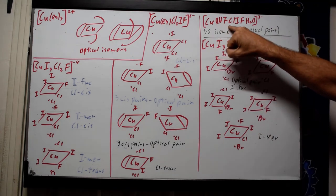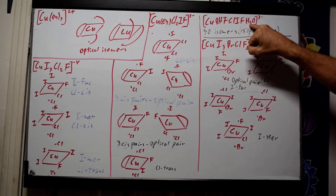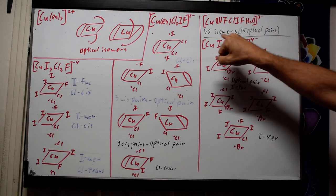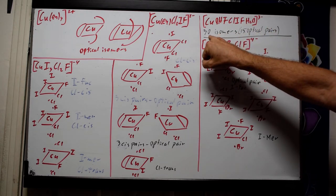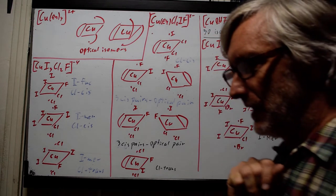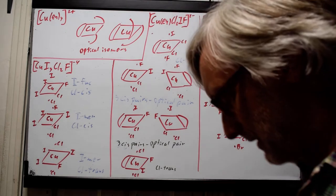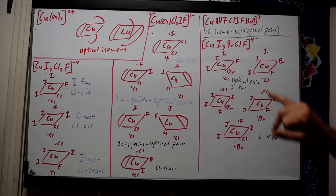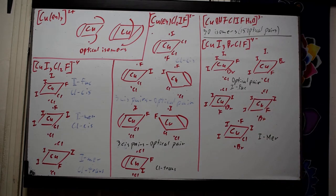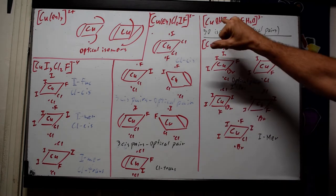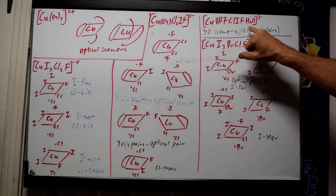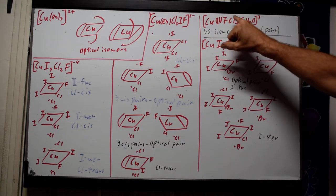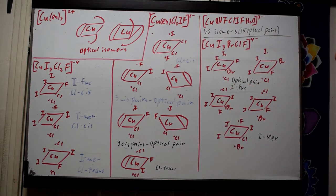If we have a total of six different ligands — though I will not go through it in detail — working through all combinations gives 30 isomers, with 15 optical pairs among them. That represents the maximum number of isomers we can get.